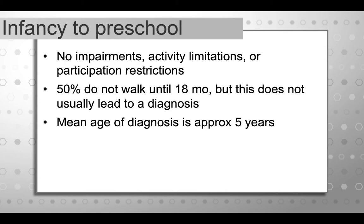Looking at the early signs of muscular dystrophy: we know this is a genetic condition children are born with, but it often isn't noted until they're older unless there is a family history or other reason to pursue testing. In infancy to preschool, there are often no impairments, activity limitations, or participation restrictions. There is a subset of boys who may be a little clumsy at ages two, three, or four, or who walk slightly later. However, a good proportion show absolutely no signs at all in those early years. About half of boys with muscular dystrophy don't walk until they're 18 months old, but this usually doesn't lead to a diagnosis.